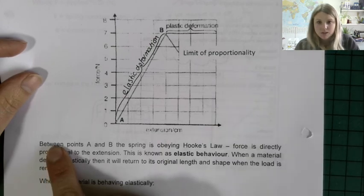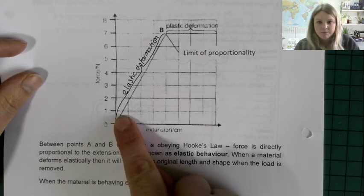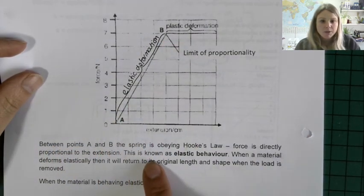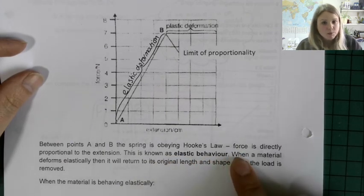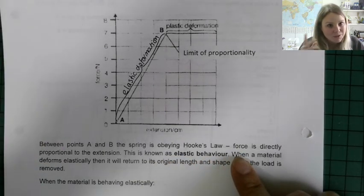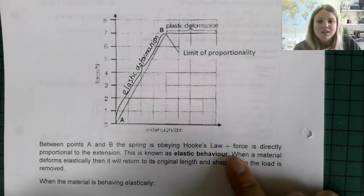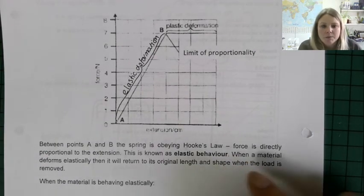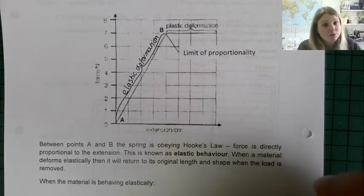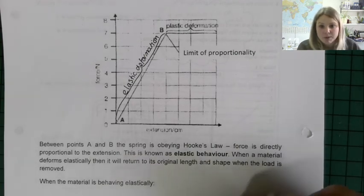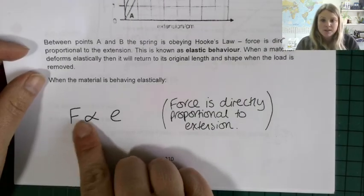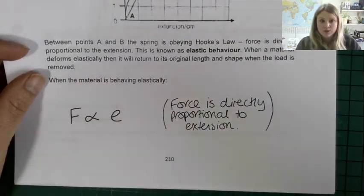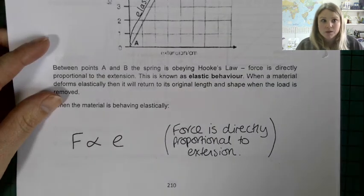Between points A and B on the graph the spring is obeying Hooke's Law — force is directly proportional to extension — you know this because it's a straight line through the origin. This is known as elastic behaviour: when a material deforms elastically it will return to its original length and shape when the load is removed.